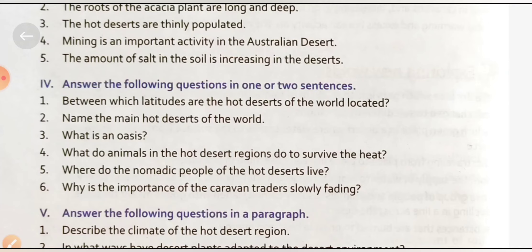Next question: 'What do animals in the hot desert do to survive the heat?' To escape the heat, many animals rest in shady places, under stones, or in burrows they make in the soil. Some animals make burrows in the layers of earth and rest there. Birds like eagles and kites soar high above the ground to escape the heat.